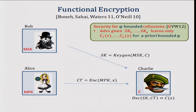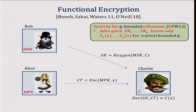Last year we studied the notion of bounded collusions for functional encryption, and informally it says a similar thing, except that now an adversary can ask for secret key 1 up to secret key Q for a bounded Q — a priori bounded Q which is fixed before the setup. The security says that given the outputs of all of the circuits evaluated on X, the adversary should be able to learn nothing more about the input X.